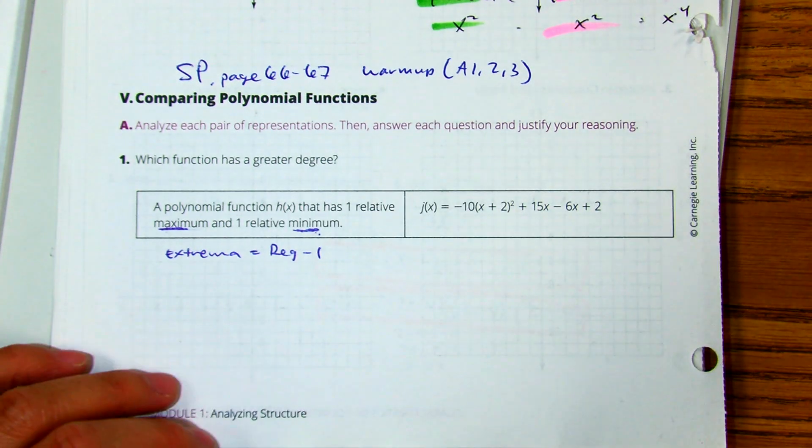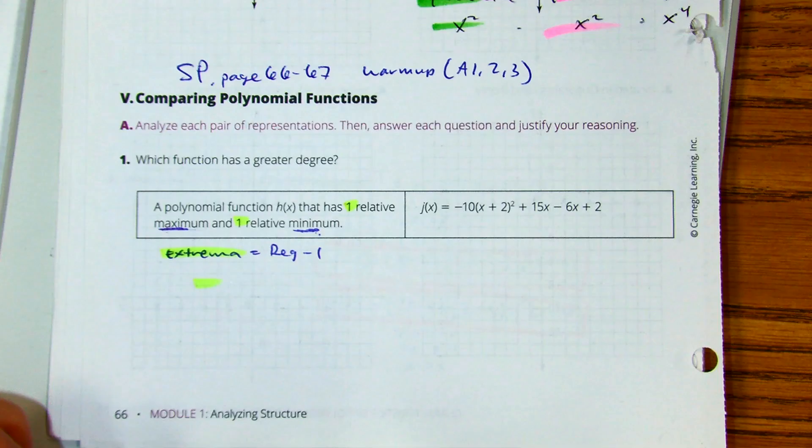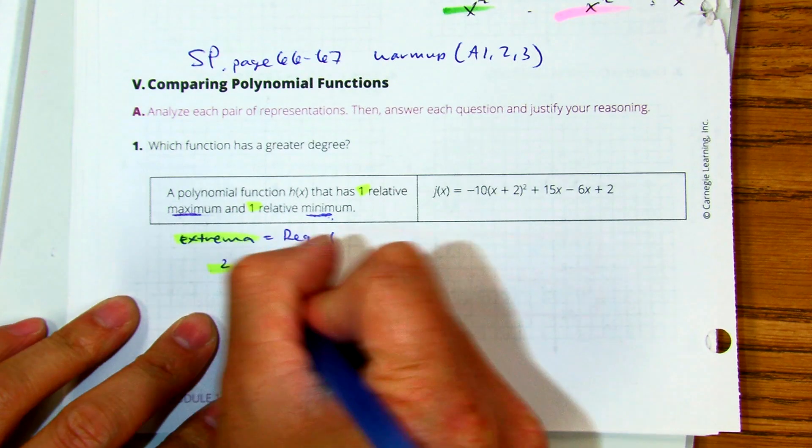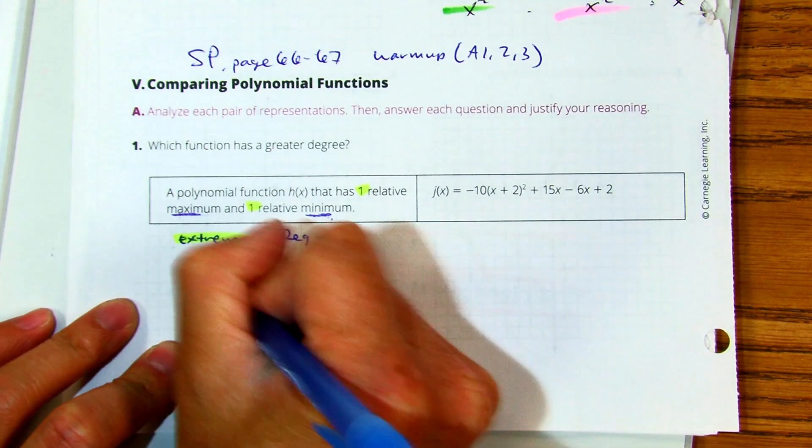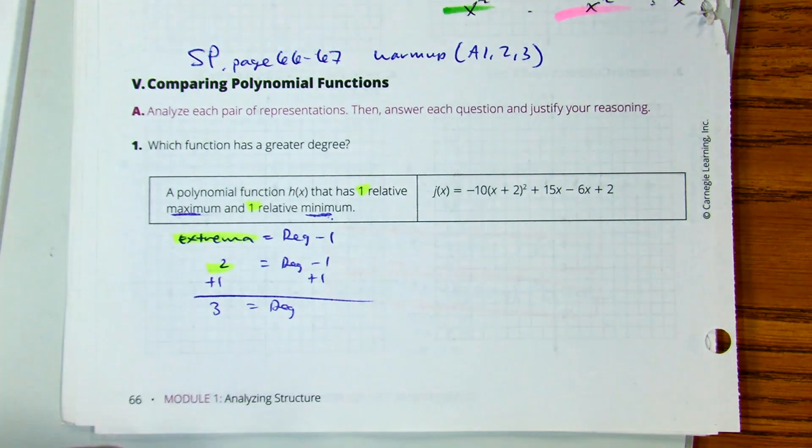Here I have one extrema, two extrema. So I'm going to put in there two. Two equals degree minus one. I'm going to add one to both sides. Therefore, I have at least a third degree polynomial.